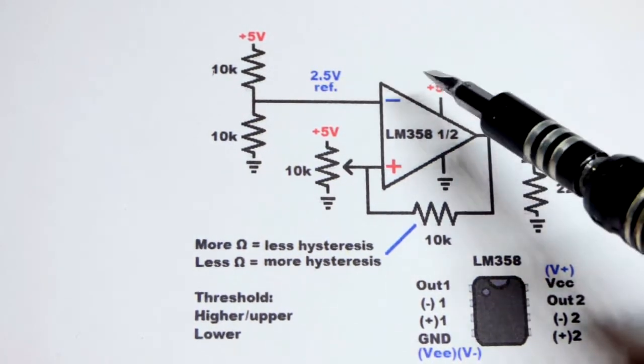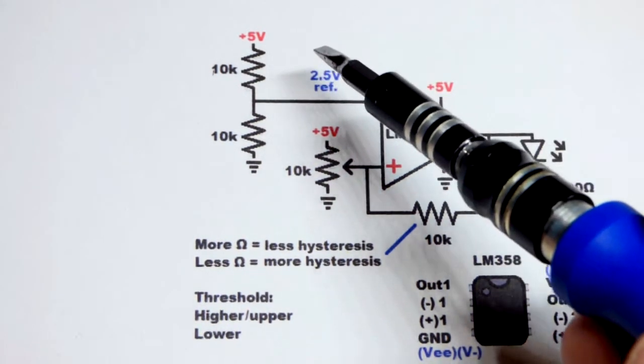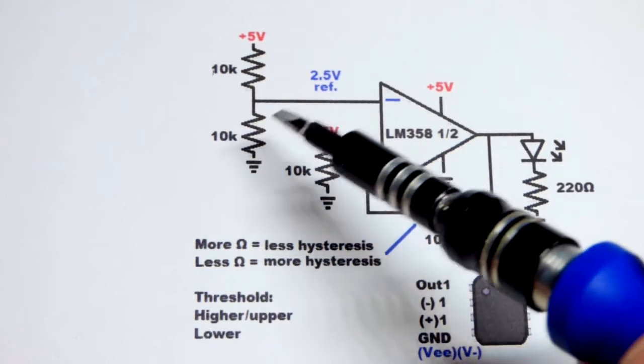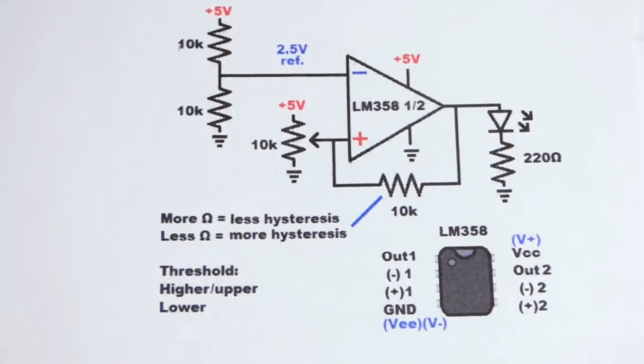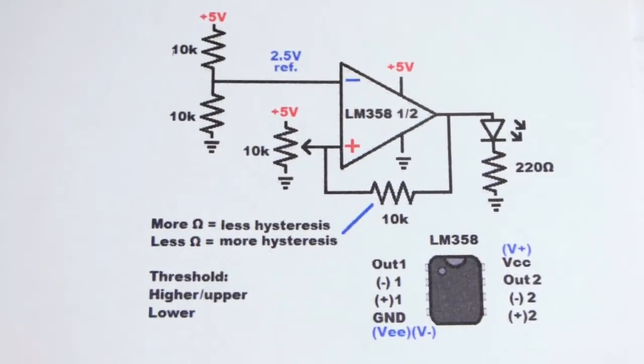And so when we raised the trim pot high enough, the output would have gone low. And if we lowered the trim pot enough, the output would have gone high. I think that would have been more confusing. So maybe I'll do that next video.